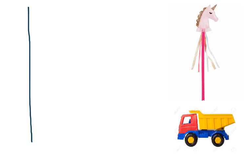We are going to learn about how to compare the lengths of many objects. What we have here is a unicorn wand and a toy truck. When we measure and compare two objects, we want to have a point to measure from. This black line on the left side will help us line up our objects so that we can measure them correctly.